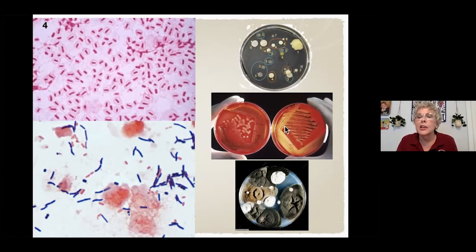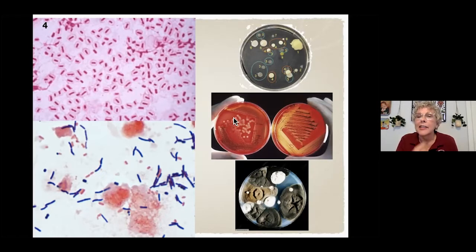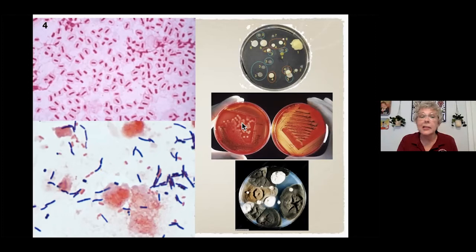These plates show group A strep. If you've ever had strep throat, you know it makes your throat really hurt. These are blood agar plates, and each colony has completely lysed the red blood cells underneath it, making it look clear. That's how it irritates your throat — those organisms are actually capable of rupturing cells in your body and causing damage. You can see it on the agar and feel it in your throat.